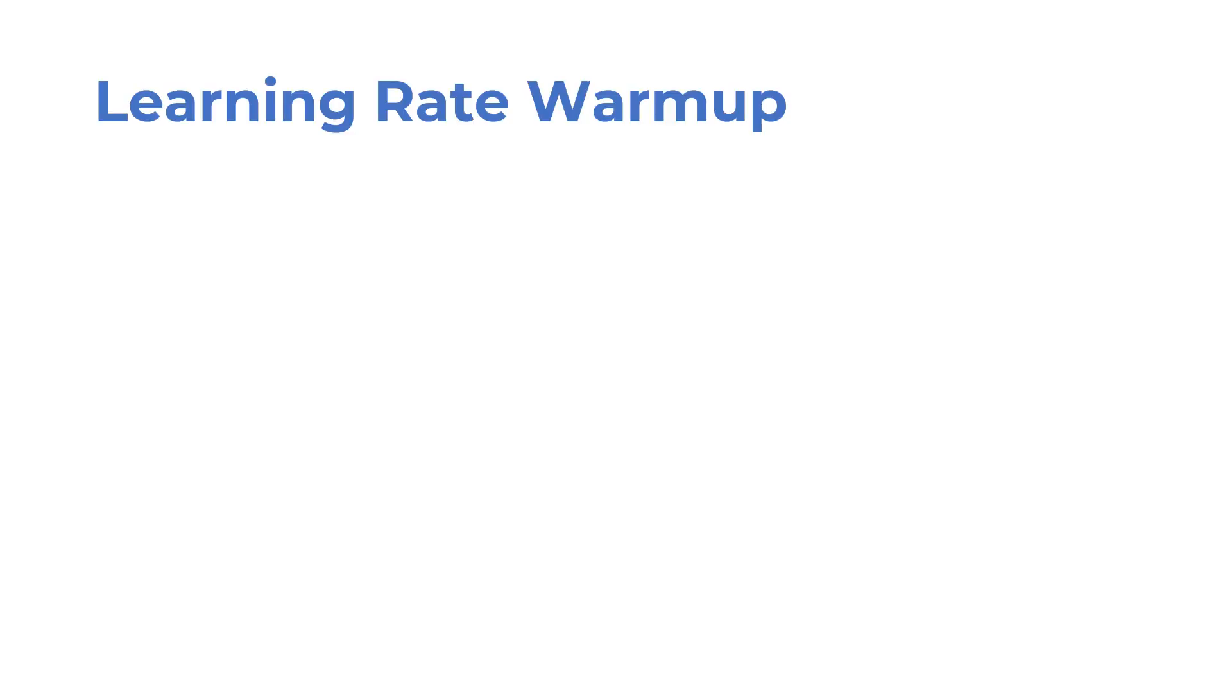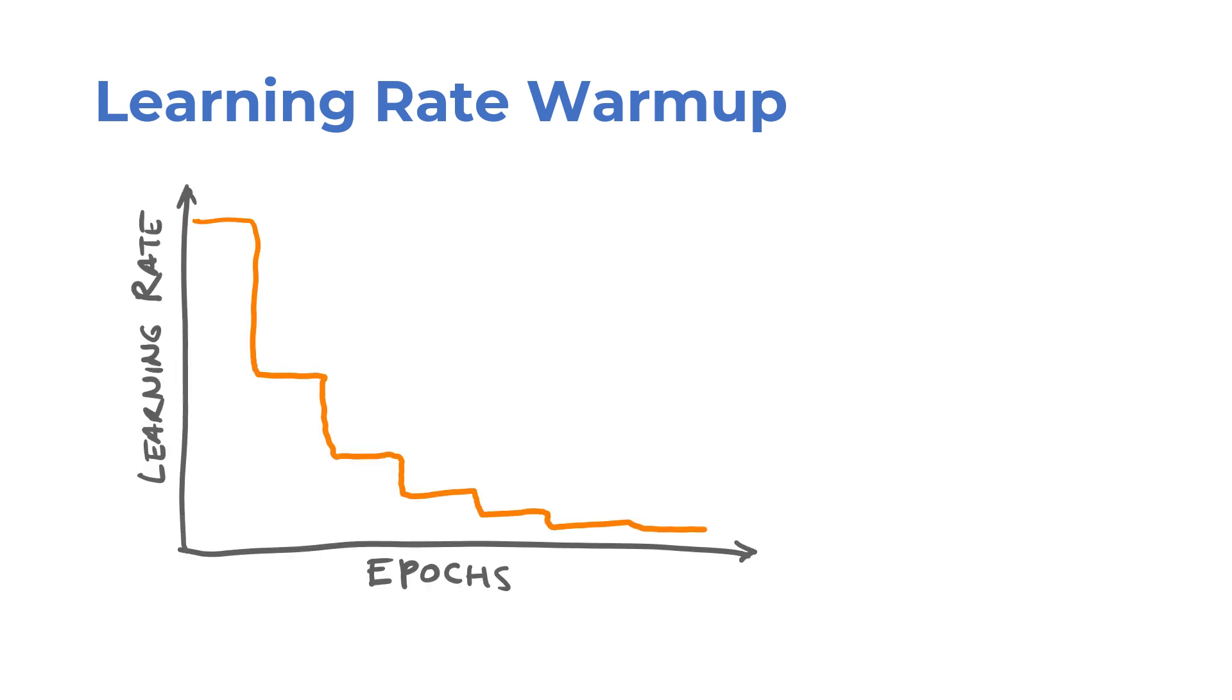Another trick is to use a learning rate warmup. It's a common strategy to start with a relatively large learning rate and decay over time. In learning rate warmup, one begins with a small learning rate and increases it to a preset value in a warmup phase, which is typically the first few epochs. Then the learning rate is decayed as usual.